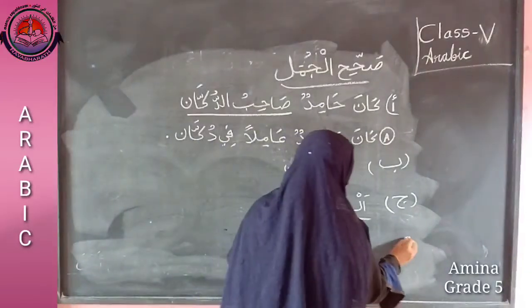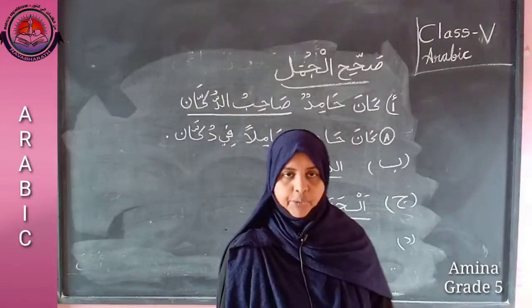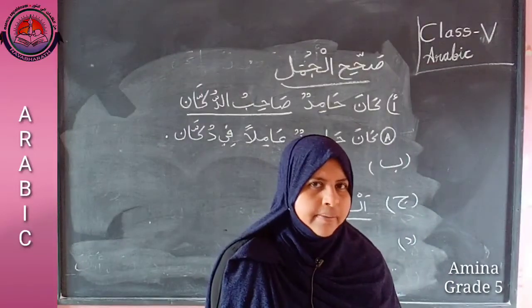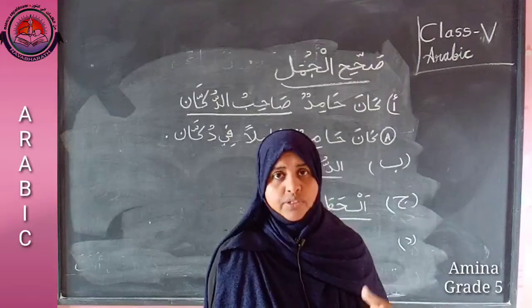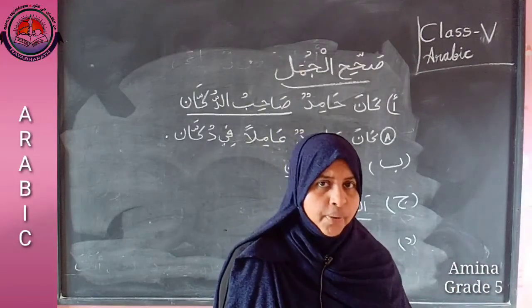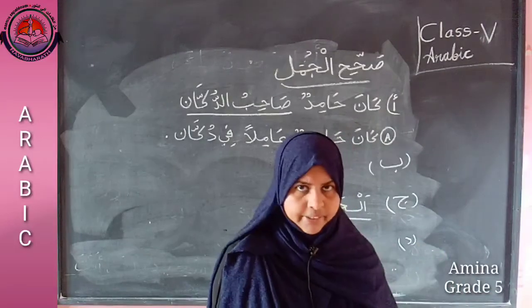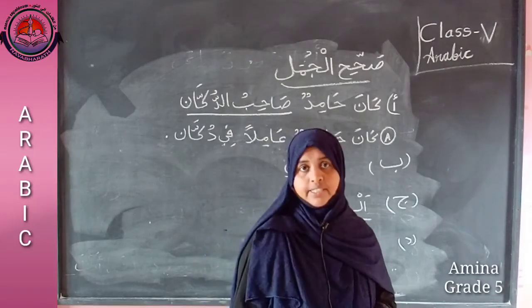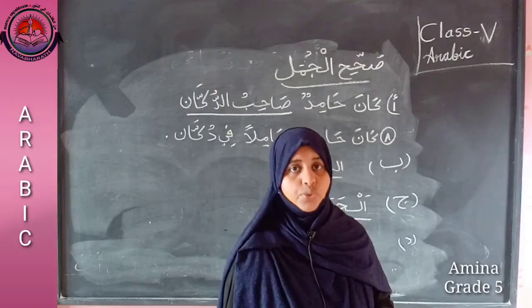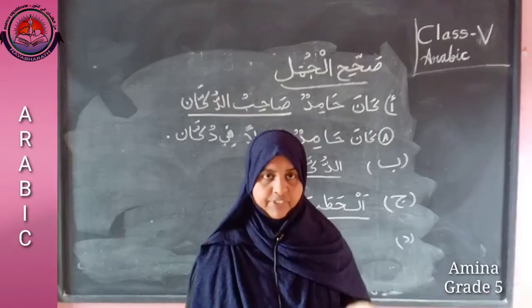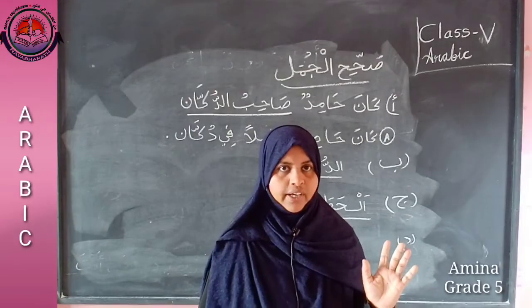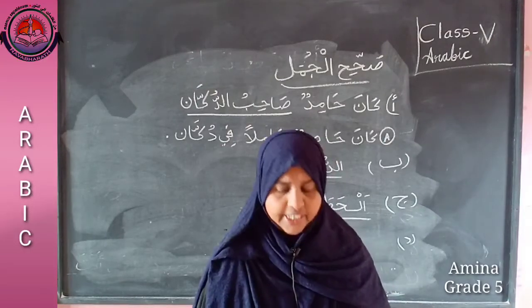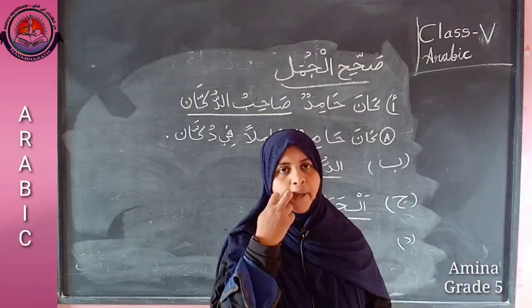Dal: Qala sahibu ddukaan Allah yubairik fiqh. Who said Allah yubairik fiqh - sahibu ddukaan or ajuz? In the lesson it was the old woman - ajuz - who thanked Hamid. So qala sahibu ddukaan is wrong. You have to change it to qalat til ajuz. Or you can change the phrase Allah yubairik fiqh to Jazakallahu khair. In any way you can do - either change qala sahibu ddukaan to qalat til ajuz.